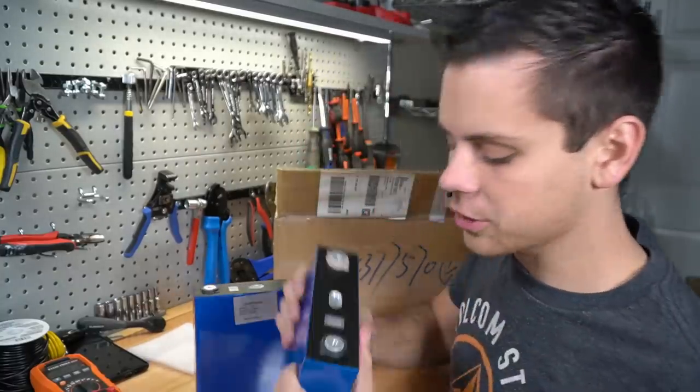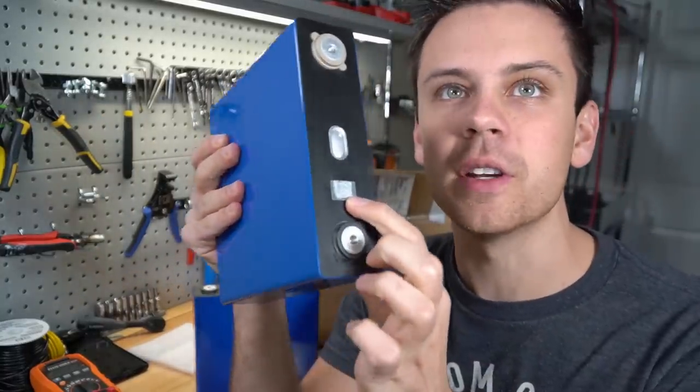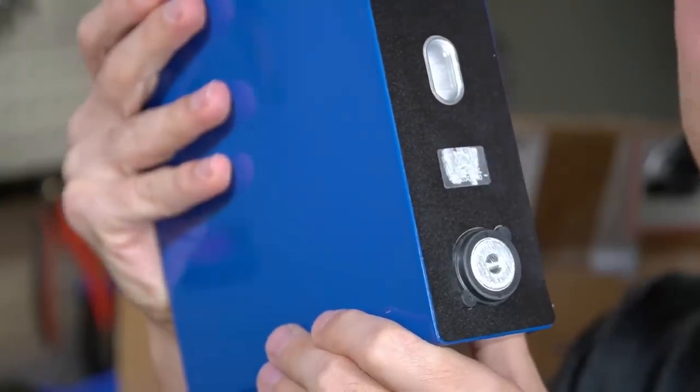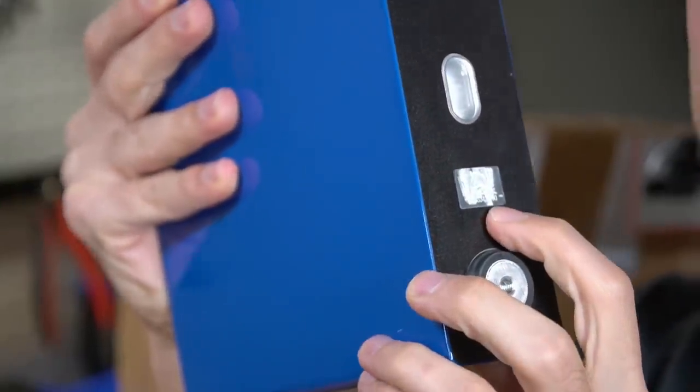Uh-oh, that's not a good sign, you guys. The warranty barcode is scratched out. Check this out. So these might be grade B cells. That is a very bad sign.